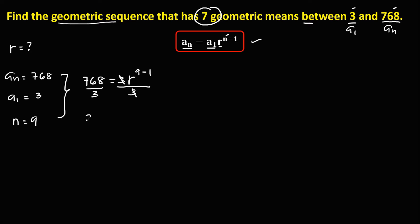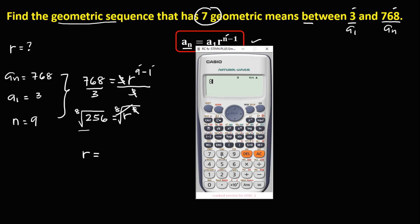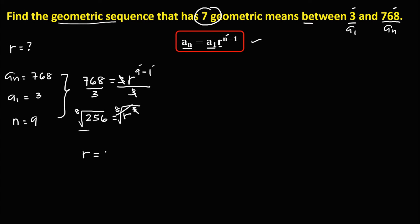So we have 256 equals R to the power 8, since 9 minus 1 is 8. To solve for R, we take the 8th root of 256, which equals positive 2. So R is equal to 2 — the common ratio is positive 2.